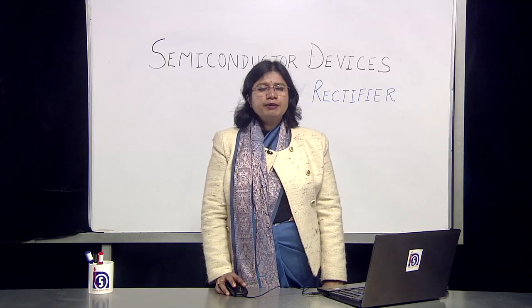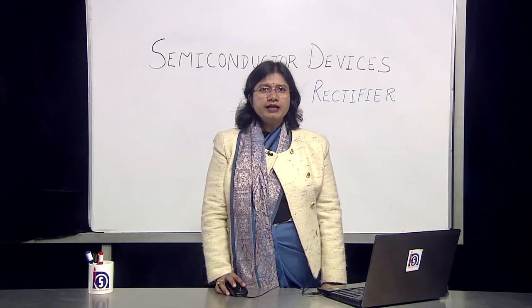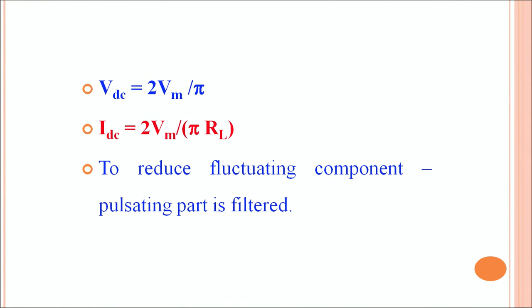Unlike the half wave rectifier, the DC voltage generated by the full wave rectifier is 2Vm/π, and thus the DC current generated is also 2Vm divided by π times RL. The amount of current and voltage is 2 times that of the half wave rectifier, making it a much better kind of rectifier.